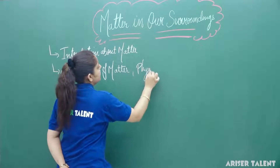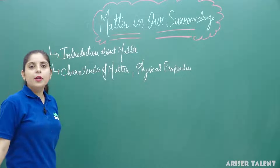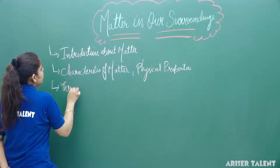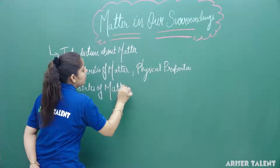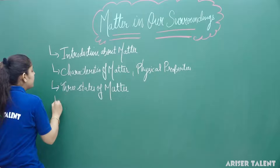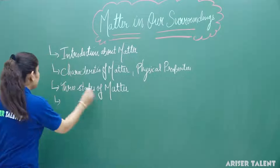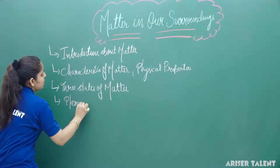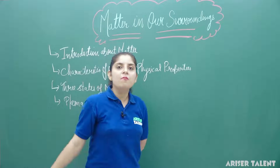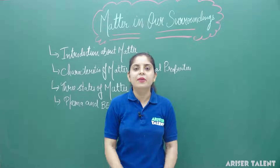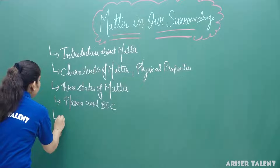Thirdly, we are going to cover the characteristics of the three states of matter and what those characteristics are. In this chapter we will also learn about two extra states of matter — plasma and BEC. Then we will see how we can convert one form of matter into another: solid into liquid, liquid into gas, and vice versa. This topic will be about interconversion.